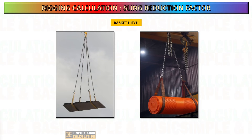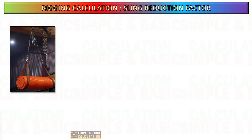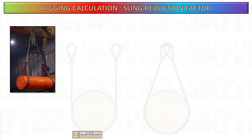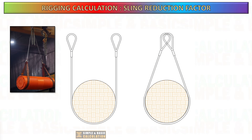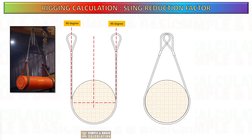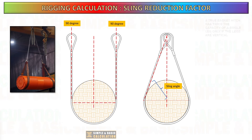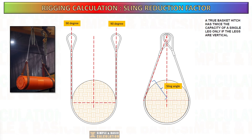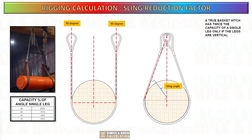Next, let us do the reduction factor calculation for basket hitch. A basket hitch has twice the capacity of a single leg, but only if the legs are vertical or at 90 degrees. This reference shows the angle that needs to be determined in order to calculate the reduction factor for a basket hitch.